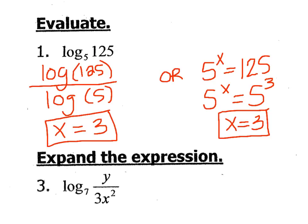If we look at number one, you can see that I solved this using two different ways, and it does not matter which way you decide to use. Our first method is using change of base, and remember when we use change of base, the base is on the bottom. So it is really important that we're reading this as log base 5 of 125. When using that method, I need to be sure to use parentheses in my calculator, and I end up getting 3 as an answer.